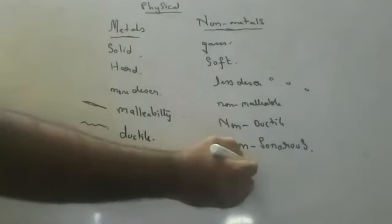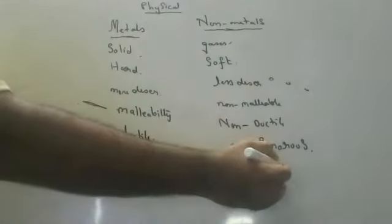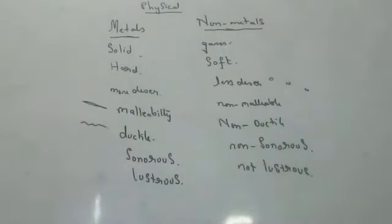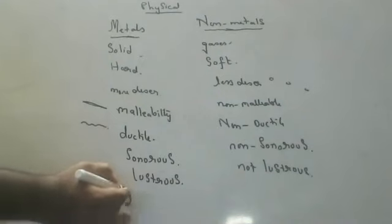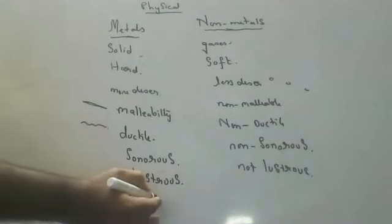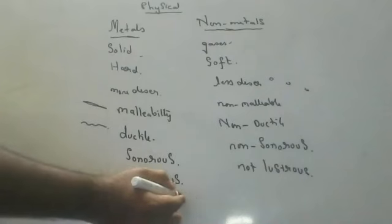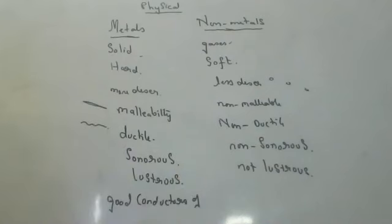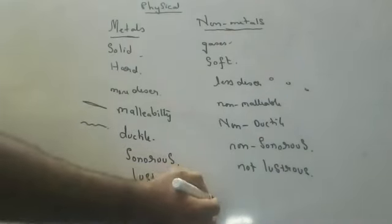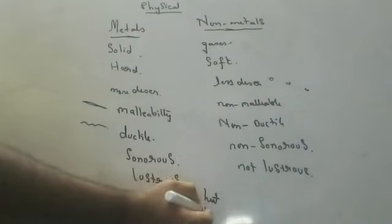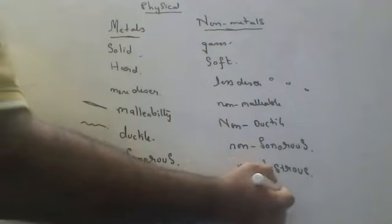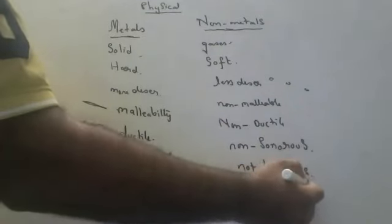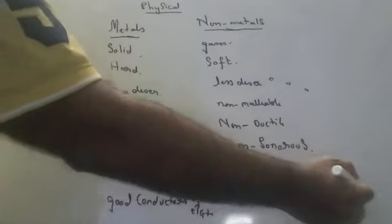Metals are sonorous. Apart from that, metals are lustrous — lustrous means they shine. Non-metals are not lustrous, though exceptions are there. For example, bromine is a non-metal which shines — that is an exception. Metals are also good conductors of heat and electricity, while non-metals are bad conductors of heat and electricity.